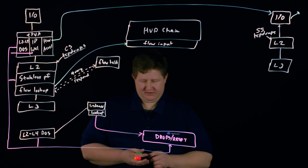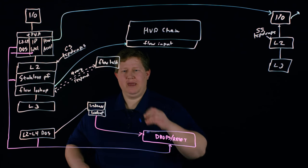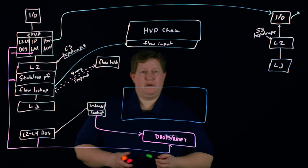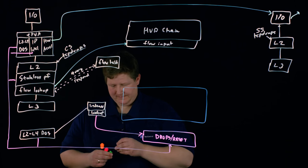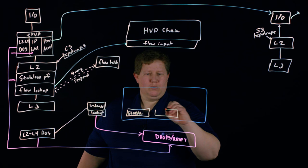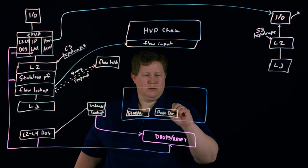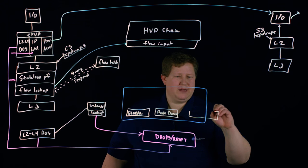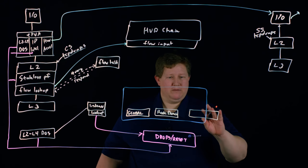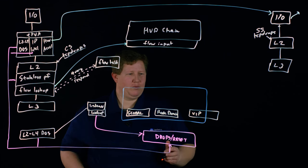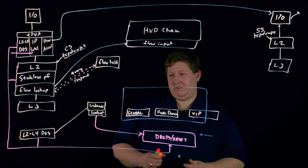If you have AFM, here's kind of where some of the AFM stuff happens. We draw a little AFM box around some of this. For AFM specifically, we have the global context, then we have route domains, and then we have the virtual server. Virtual servers fit kind of inside AFM and outside — if you don't have AFM the virtual server process still applies, but it has a specific role if you do have AFM.